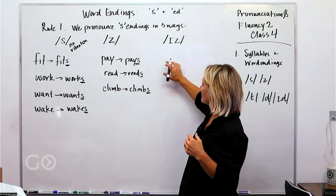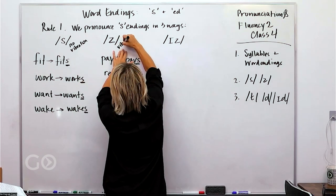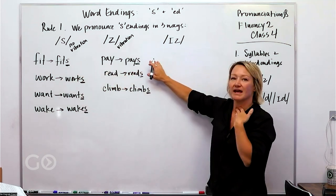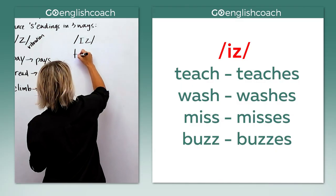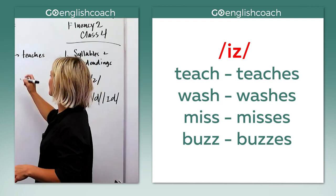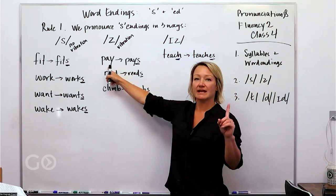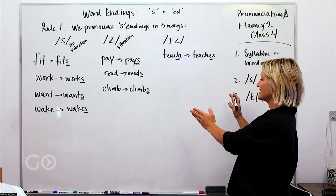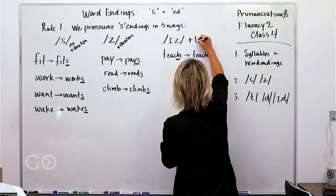Now we've got this third way of pronouncing something. And if you notice, in both of these cases with S, this does have vibration. So no vibration, fit, fits, no vibration. Pay, pays, it does vibrate here. Now with this I Z sound, we've got, let's see, teach. Here's an example. Teach goes to teaches. Teaches, so you've got this is the final sound. And the final sound here is IS. So if you notice here, pay one syllable, pays one syllable. We are not adding a syllable. However, in this category we do add a syllable. So teach, teaches, we've got a plus one syllable here.